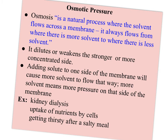Osmosis is a natural process where the solvent flows across a membrane, always from where there is more solvent to where there is less — from the more dilute side to the more concentrated side. In other words, it flows toward where there's more solute, diluting the more concentrated side. If you add solute to one side of the membrane, the solvent will flow that way, increasing the pressure on that side.